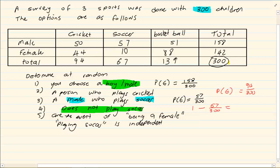Or we could simply say 1 minus the probability of soccer. Soccer is 67 over 300, which means the probability of not playing soccer is equal to 233 over 300.